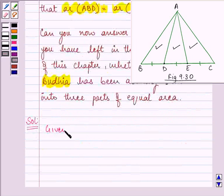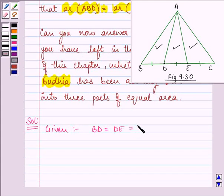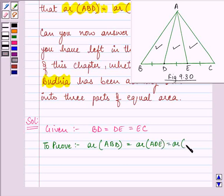Here in this question we are given that BD is equal to DE is equal to EC. We need to prove that area of triangle ABD is equal to area of triangle ADE is equal to area of triangle AEC.